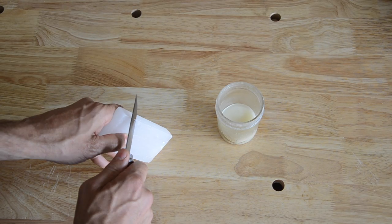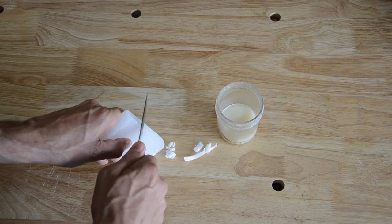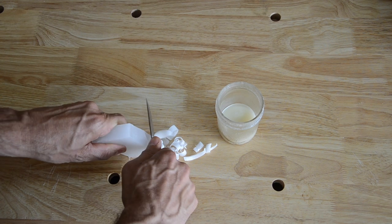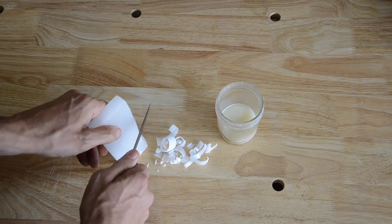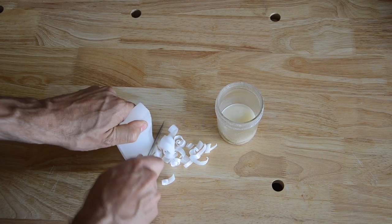While that's boiling, I'm going to shave off some of this wax and I'm going to fill up that jar. I found that it's better to use thin shavings. They melt quicker than larger chunks.